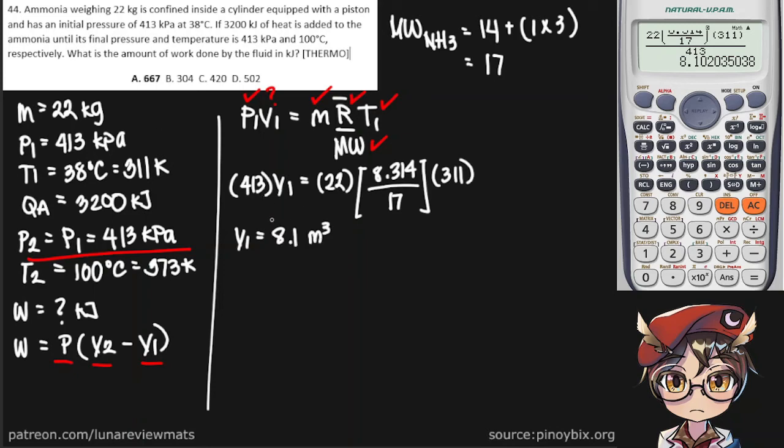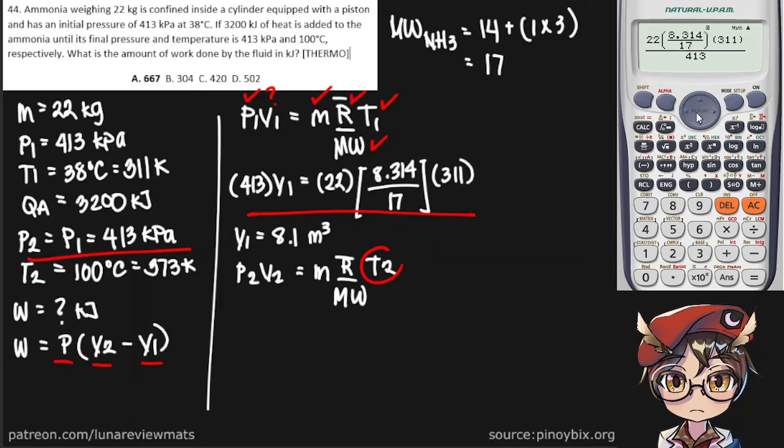Now we can simply do the same for the final state. Now the only thing that would change here would be the temperature. Otherwise, it's exactly identical to the one right here. So let's change that in our calculator. This is 373. And we get a volume of 9.72.